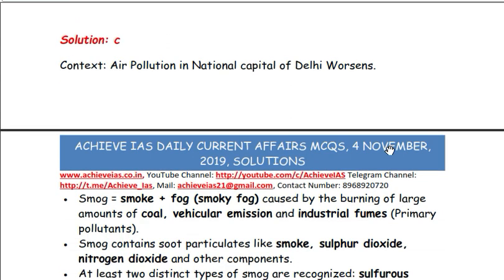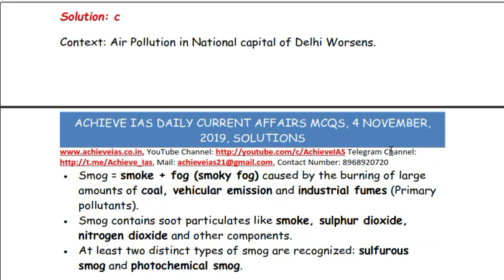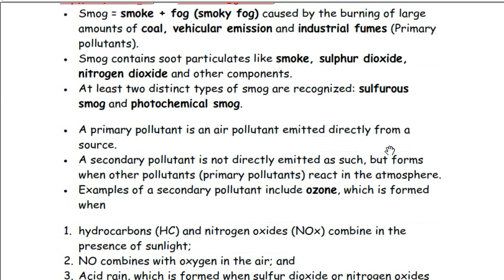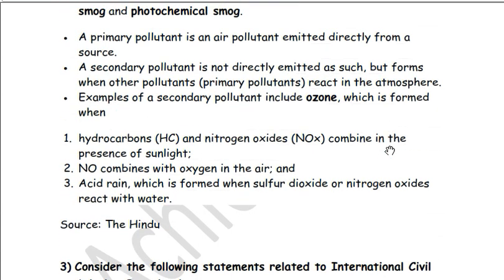Smog is a phenomenon caused by the mixture of smoke and fog. Fog normally occurs in winters due to cooler temperatures, and when it mixes with smoke, smog is formed. At least two distinct types of smog are recognized: sulfur smog and photochemical smog. Primary pollutants are air pollutants emitted directly from a source, while secondary pollutants are not directly emitted as such. These pollutants result in the formation of smog.